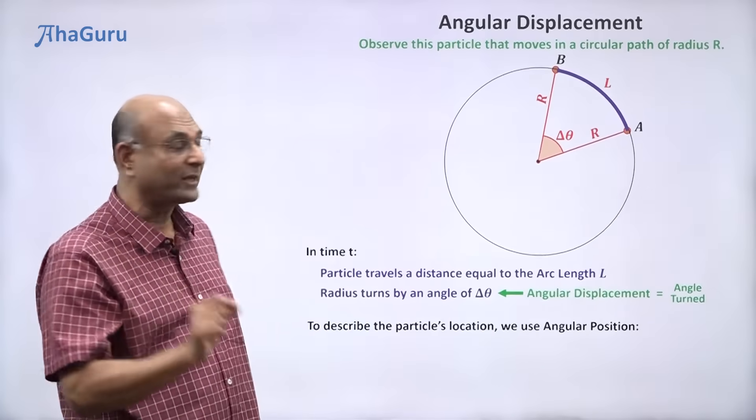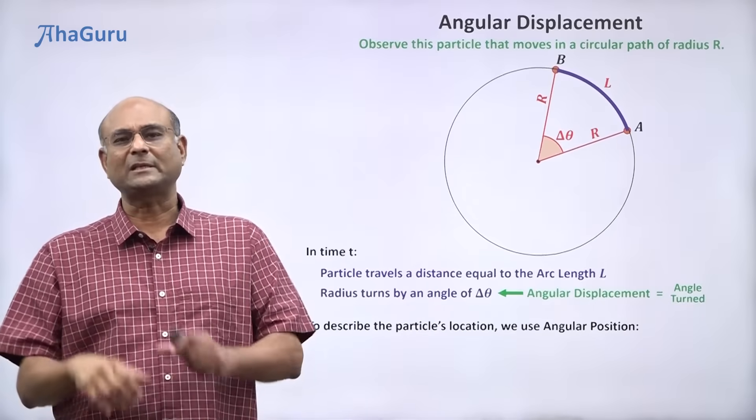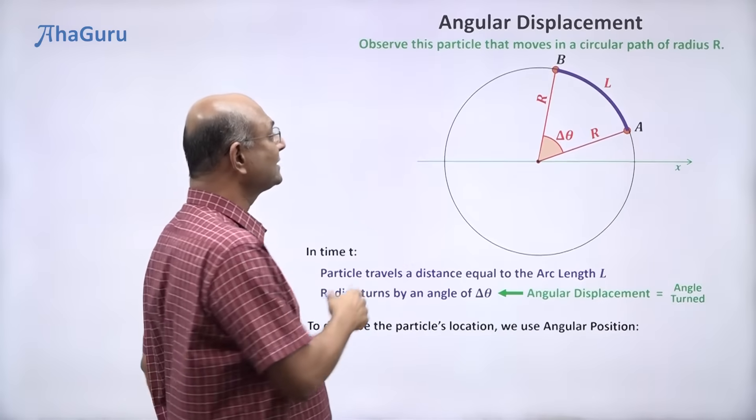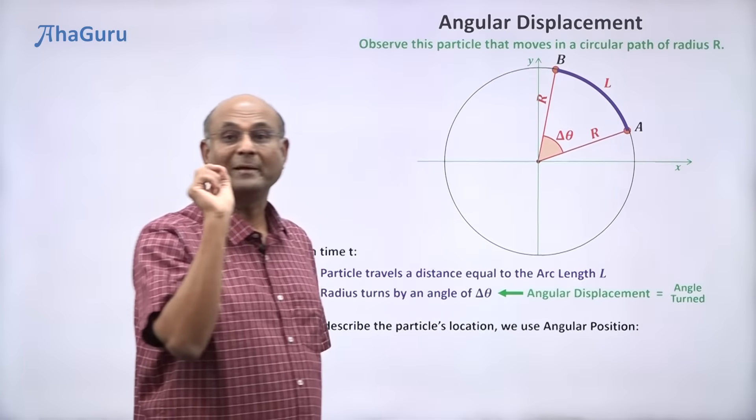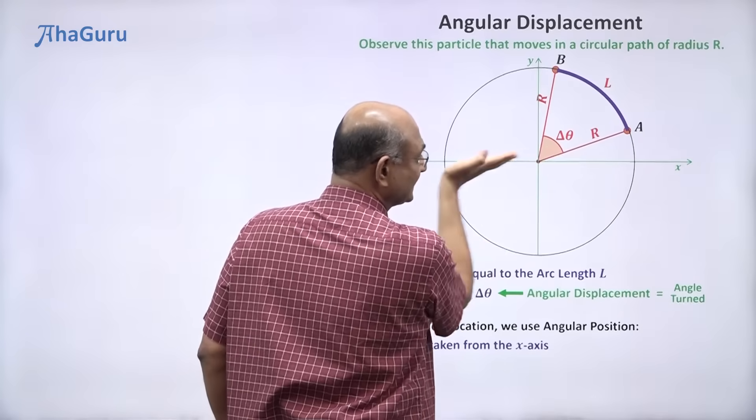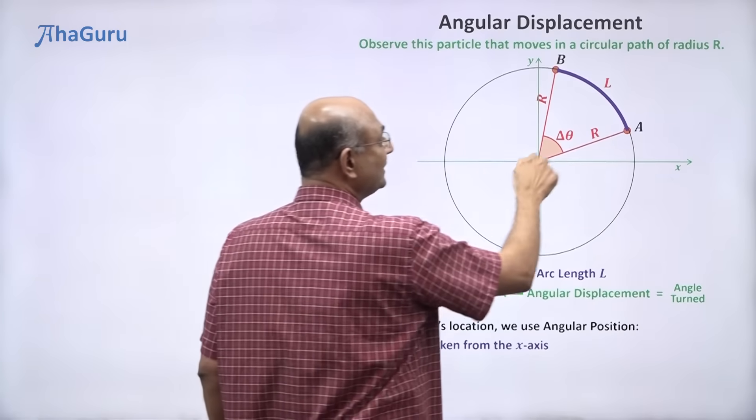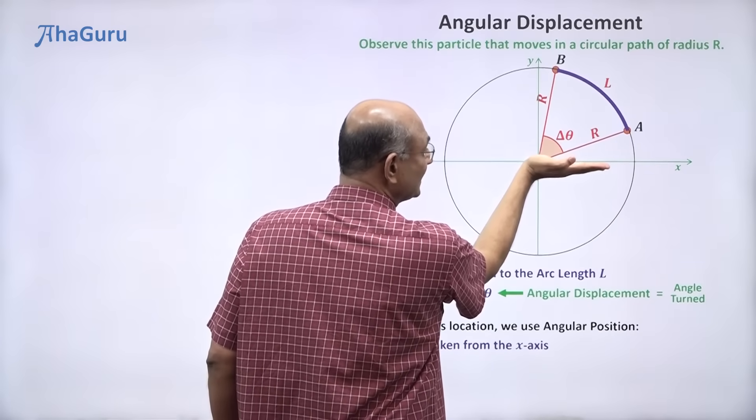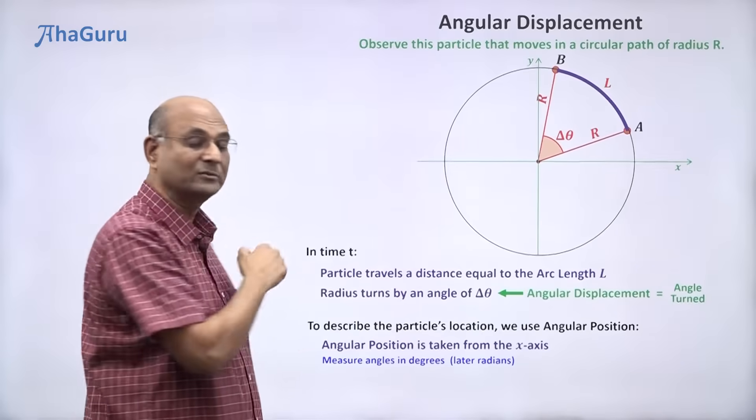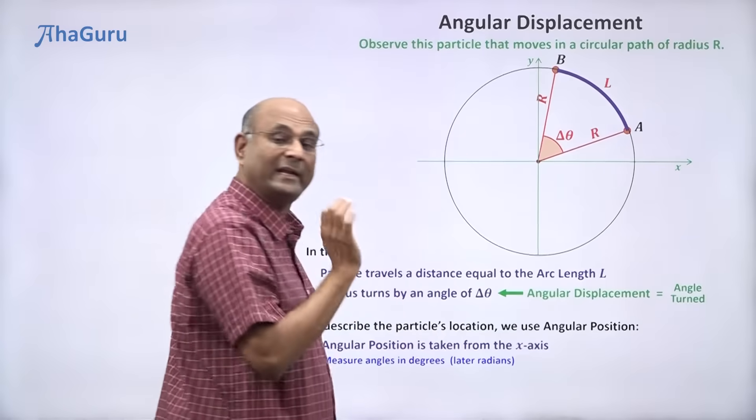To describe the particle's location, we use angular position. Now, angular position must be measured from something that is fixed. What is a good fixed way to measure things? X axis, y axis. So we are going to use x axis, y axis. And we will measure angular position from the x axis. We will use x axis as the fixed starting point and measure angles from there. So initially, it was at a. So that means you are going to measure starting from here. And we will use angles in degrees. Later, we will start using radians. So we will be measuring the angle from the x axis to the initial position.